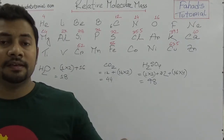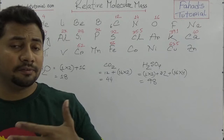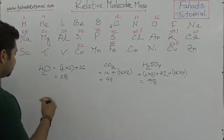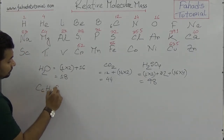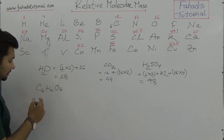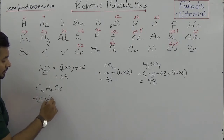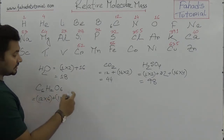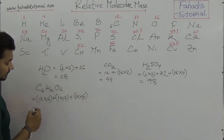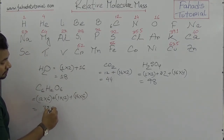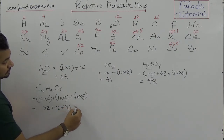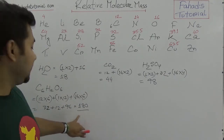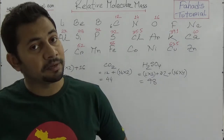For any compound — like ammonia, sulfuric acid, soda ash, or even glucose — we apply the same method. For glucose, C₆H₁₂O₆: carbon is 12 times 6 equals 72, plus hydrogen is 1 times 12 equals 12, plus oxygen is 16 times 6 equals 96. All together: 72 plus 12 plus 96 equals 180. So the relative molecular mass of glucose is 180.